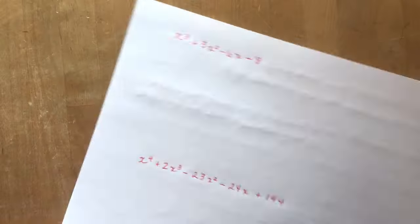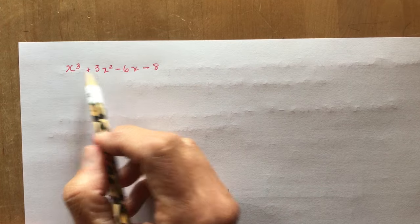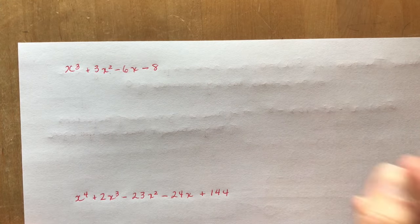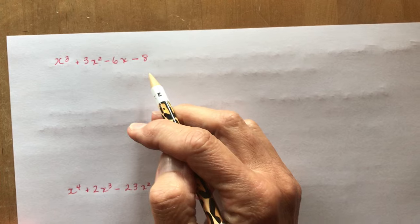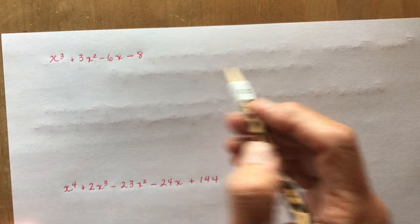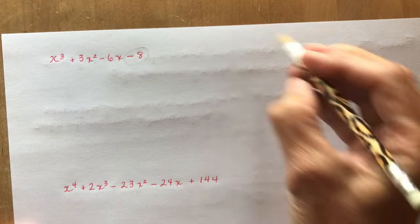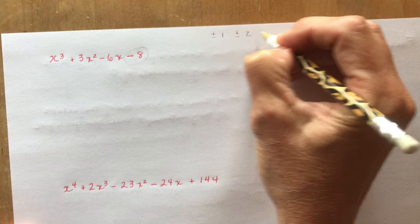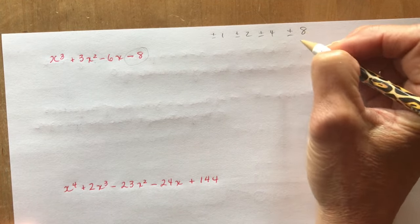Let's do some more practice. Here we have x cubed plus 3x squared minus 6x minus 8 and I want to factor it completely. So again we have plus or minus 1, plus or minus 2, plus or minus 4, plus or minus 8.